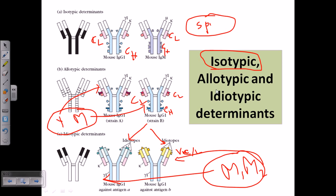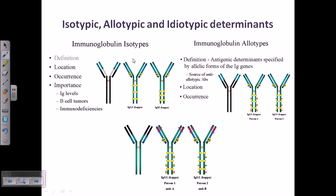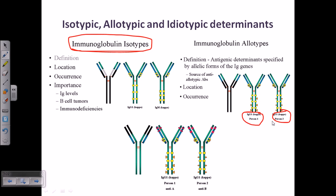So these are the three different types: isotypic, allotypic, and idiotypic determinants. In isotypic immunoglobulins, we see similarities across all members of the whole species. For allotypes, we get variations between you and me. For idiotypes, even immunoglobulins within my own body are all different from each other. As we go from isotypic to allotypic to idiotypic, we are moving towards much more specificity. This is the actual concept.